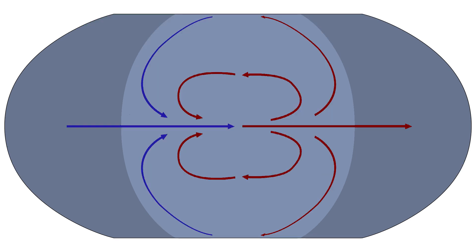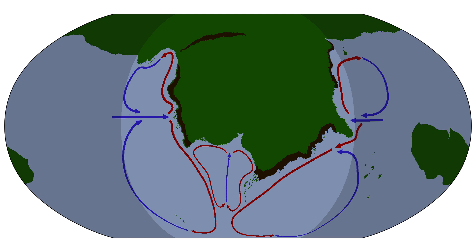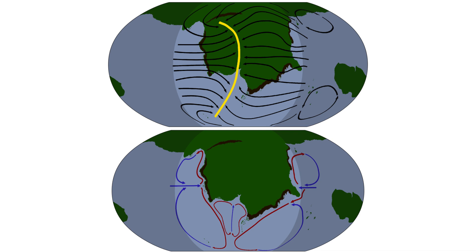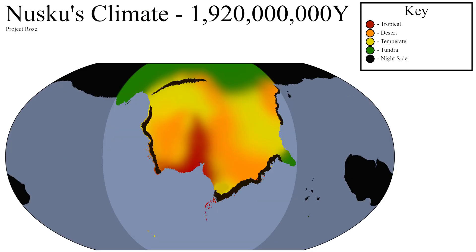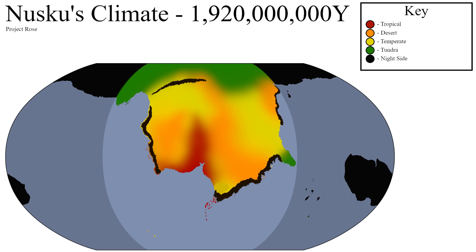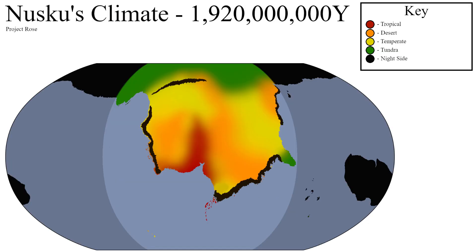The ocean currents on tidally locked worlds generally look something like this. When you factor in Nusku's major land masses, the global currents will look something like this. The climate of Nusku can be largely inferred simply based on these two things. Precipitation and cloud cover will be most common around the areas where the easterly and westerly winds meet, so most of the tropical areas will be concentrated around here. Drier areas can be inferred when wind passes over major mountain ranges, creating a rain shadow.